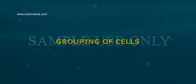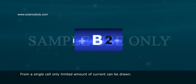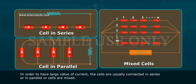Grouping of Cells. From a single cell, only a limited amount of current can be drawn. In order to have large value of current, the cells are usually connected in series or in parallel or cells are mixed.